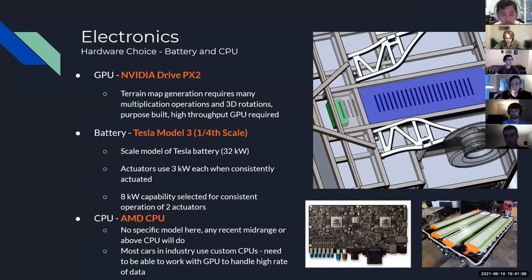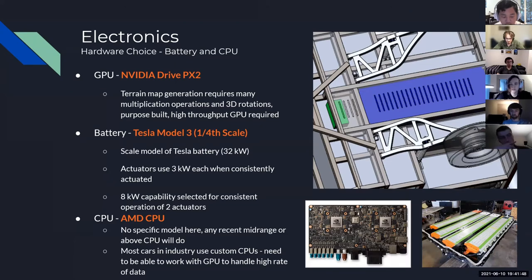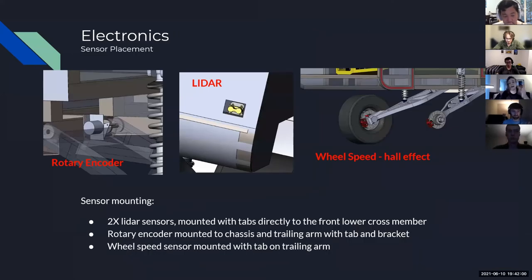For computational and electrical components, our primary computer is an NVIDIA Drive PX2 — a custom GPU line from NVIDIA meant for automotive applications. We primarily need this because our terrain map generates so much data that needs to be processed so quickly that we need an extremely powerful GPU. For our battery, we're using a one-quarter scale version of the Tesla Model 3 battery with at least 32 kilowatt-hours of power. Our actuators each use 3 kilowatts, so 8 kilowatts total — well within the 32 kilowatt-hour capacity for consistent continuous actuation.